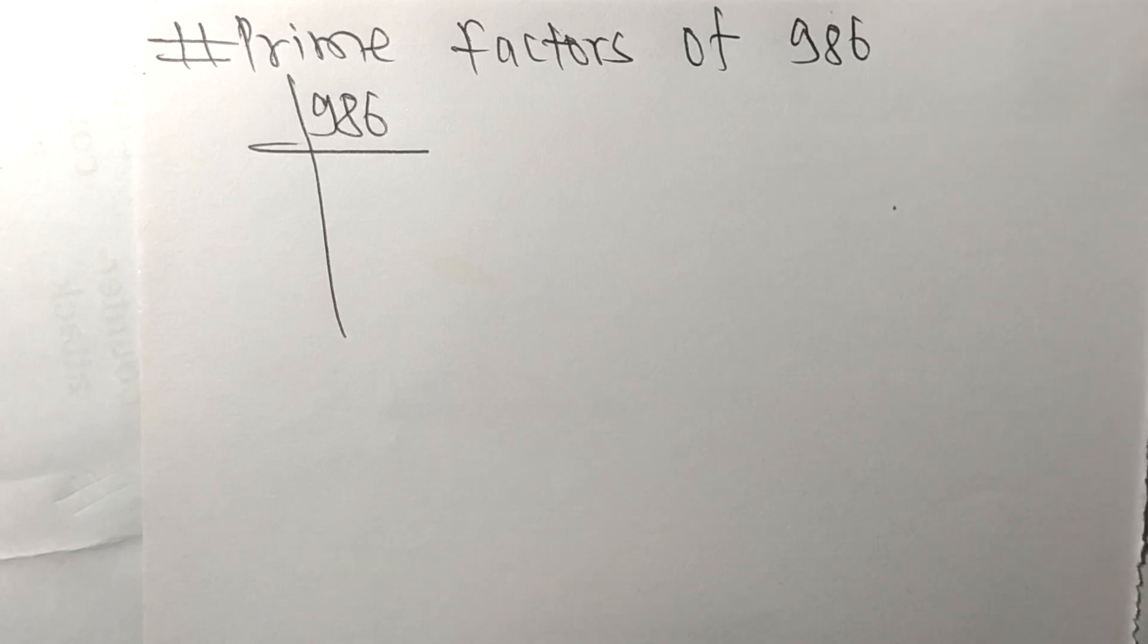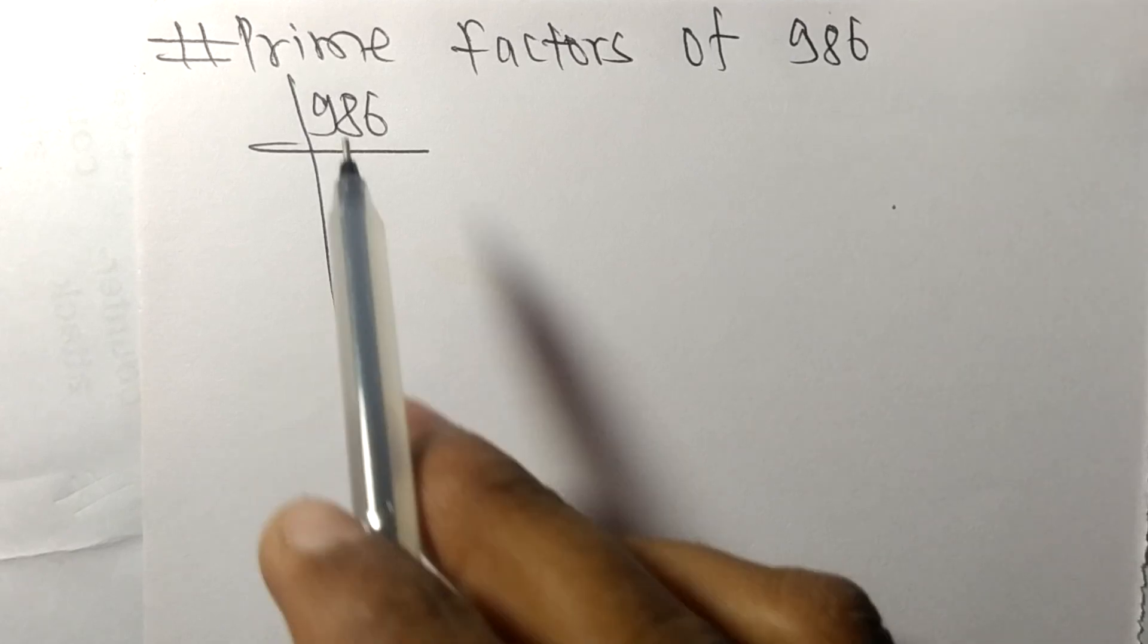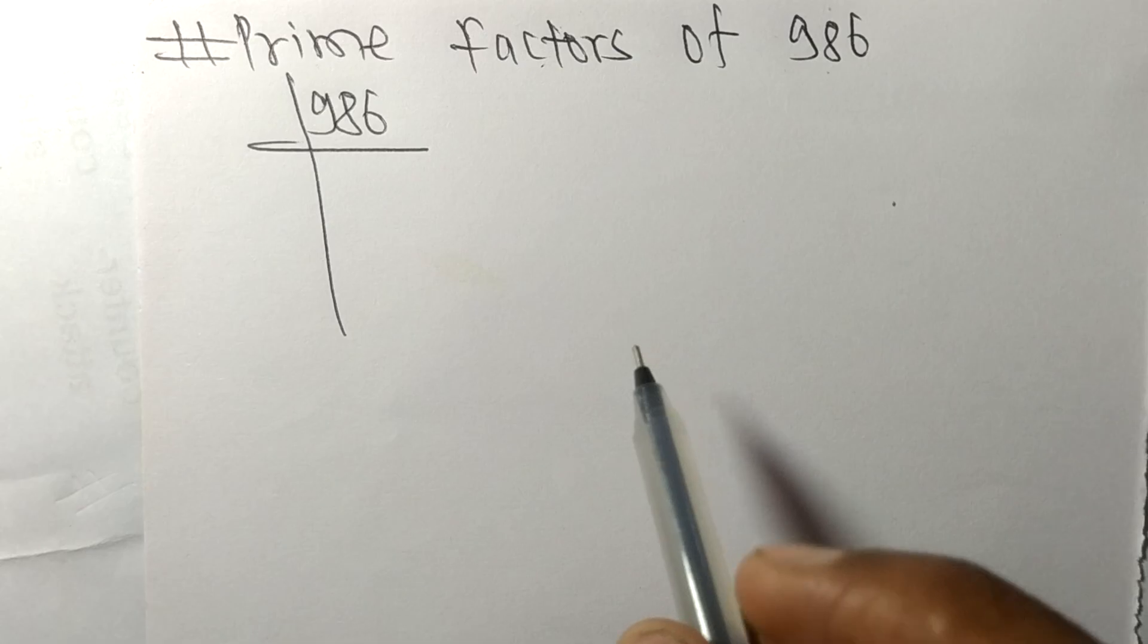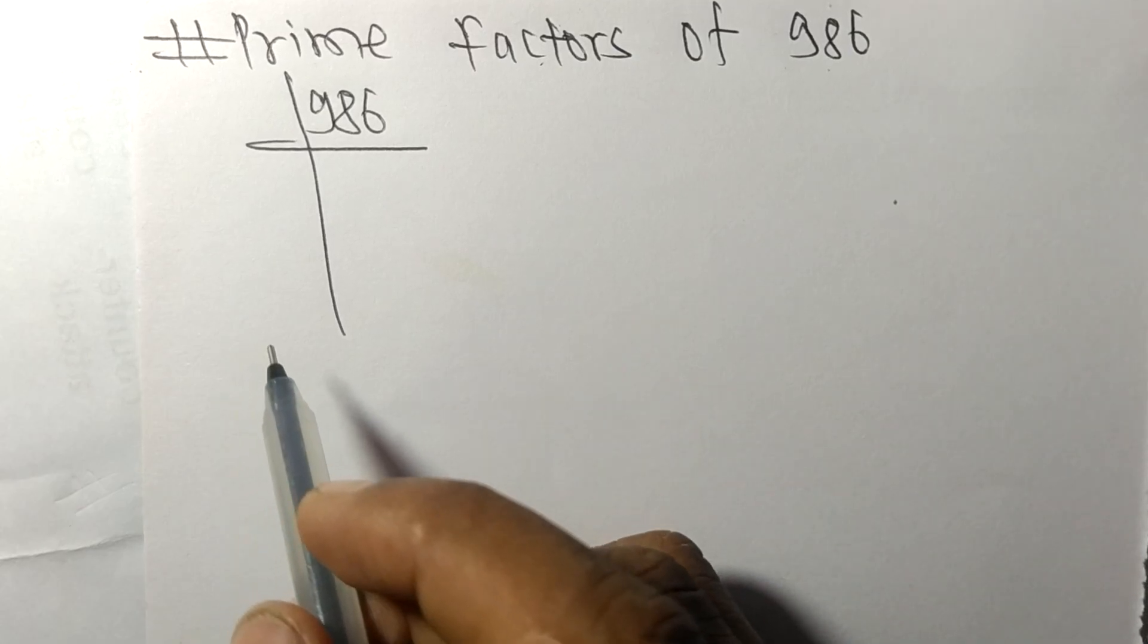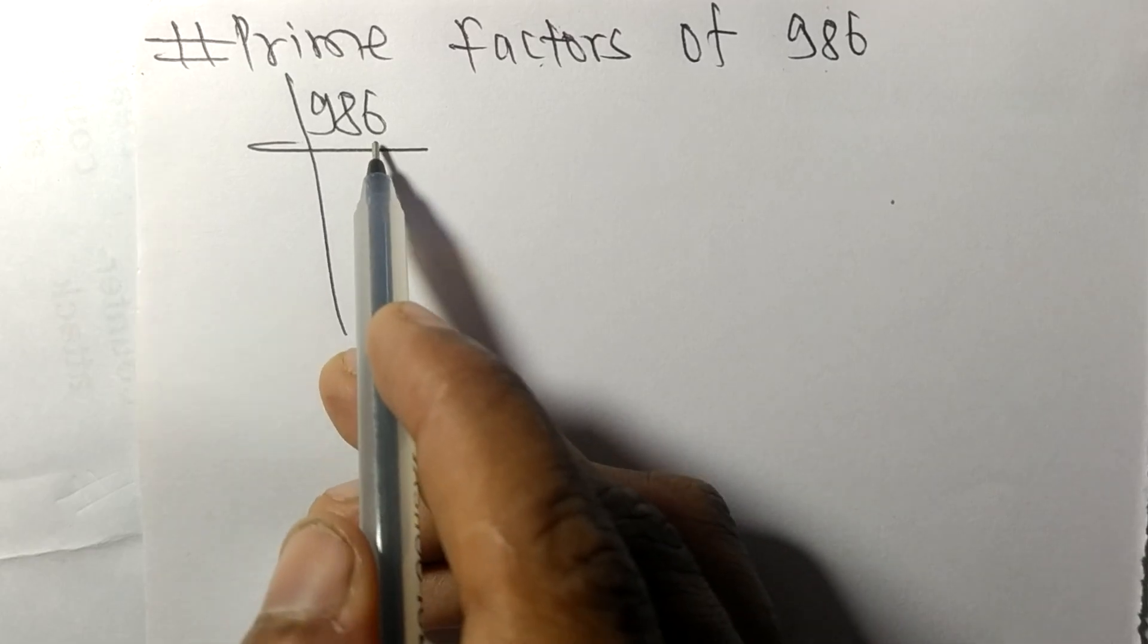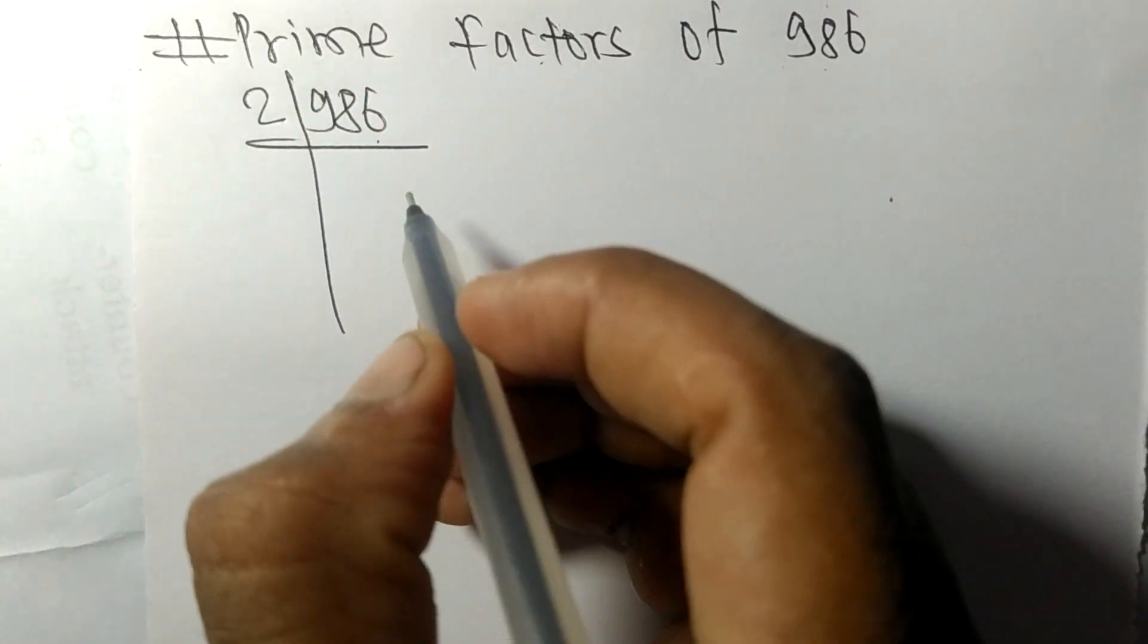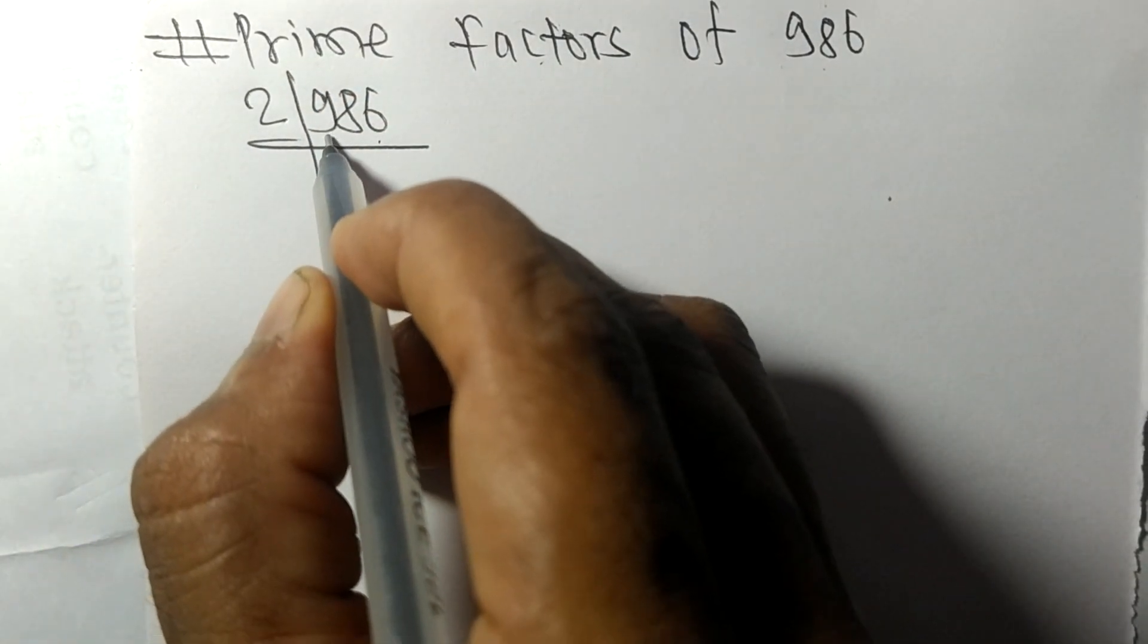Today in this video, we shall learn to find the prime factors of 986. Since it ends with an even number 6, the whole number is divisible by 2. So first we have 9...